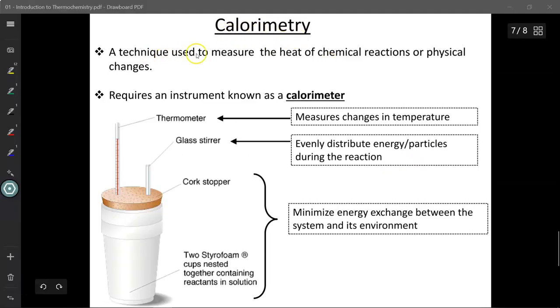Calorimetry is a technique used to measure the heat of chemical reactions or physical changes, so the amount of energy lost or gained during these physical or chemical changes. To do this, we require an instrument known as a calorimeter. Now, this is a very simple calorimeter, but essentially you've got a thermometer to measure delta T, change in temperature.